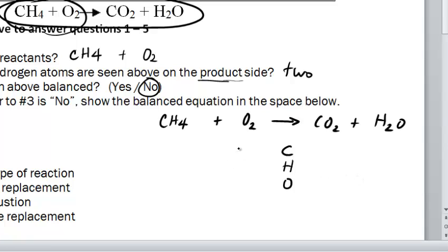So how many carbons do you see over here on the reactant side? It's just one. How many over here on the product side? It's also one. How many hydrogens are over here on the reactant side? Four. And how many are over here on the product side?